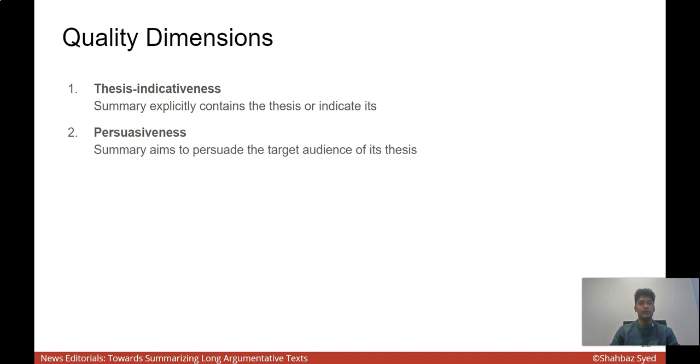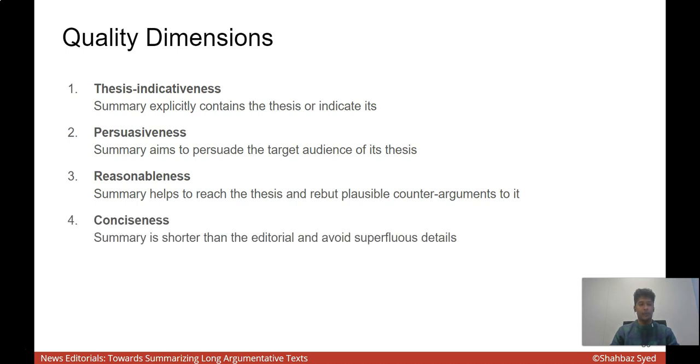Then we have persuasiveness, which means the summary should be persuasive. Then we have reasonableness, which means the summary should contain sufficient justifications in order to help the audience reach the thesis and also rebut any counter-arguments to it. Then we have conciseness, and then we have self-containedness. The last two properties are properties of summarization in general, which means the summary is shorter than the editorial. However, it is understandable without needing many additional resources and is self-contained.